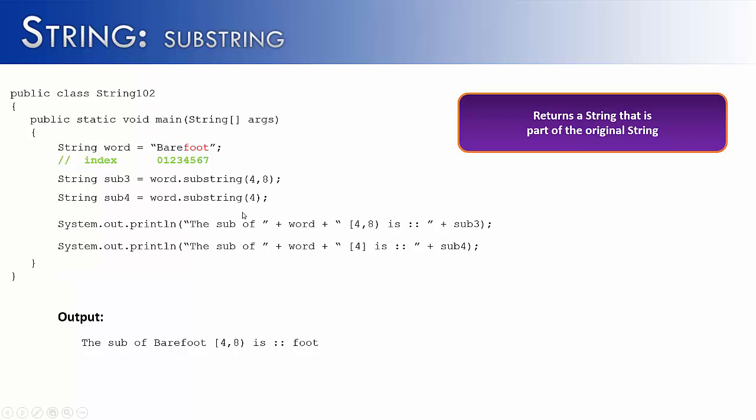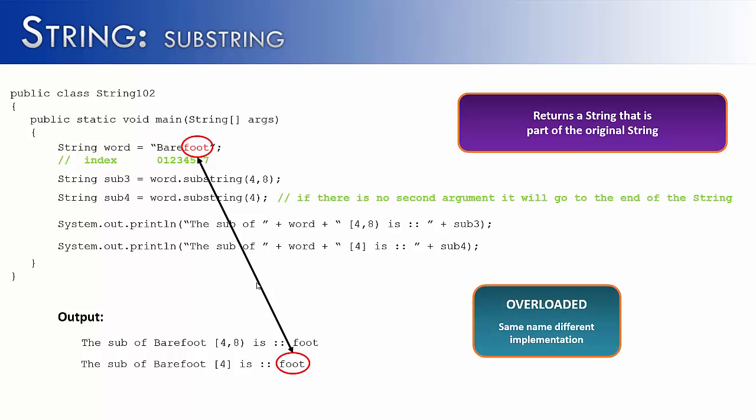You can see that I've changed it up a bit. Instead of saying 4, 8, I've only added one parameter with 4. And let's see what that prints out. Well, it prints out the same thing. Well, how does that work? I still get foot without having a second parameter. Maybe you can guess what it's doing, but I'll tell you. If there is no second argument, it will go to the end of the string. So if I started at 2, it would give me refoot. Or if I started at 5, it would give me oot.